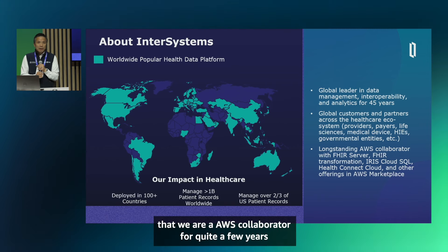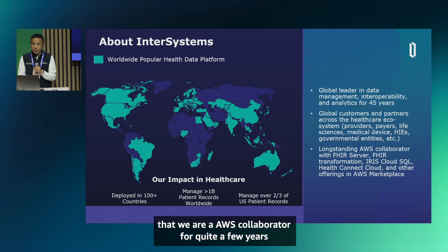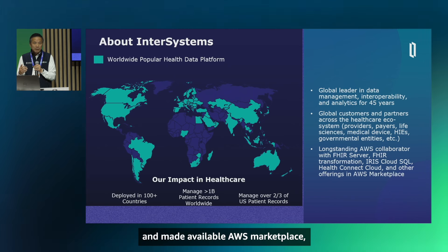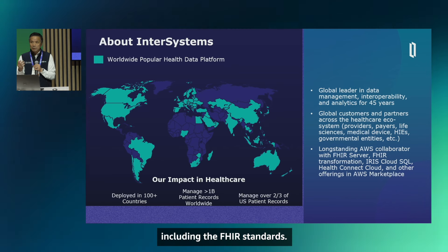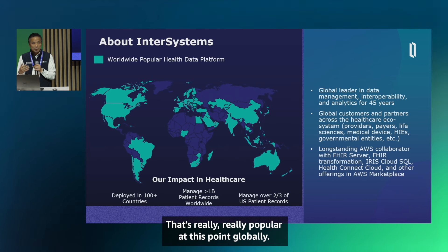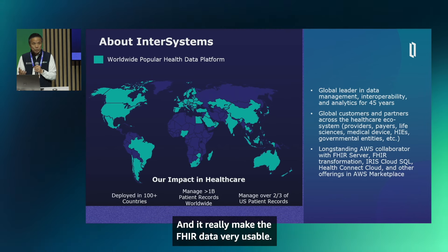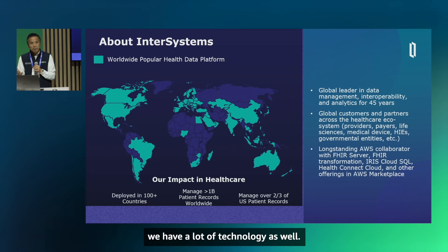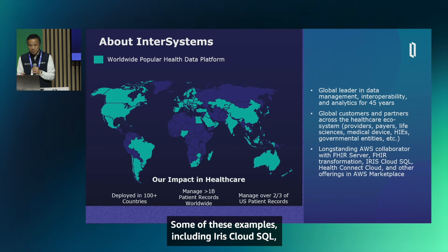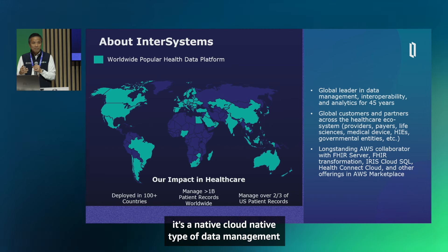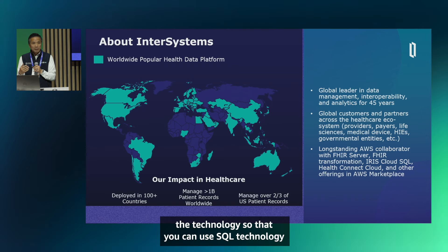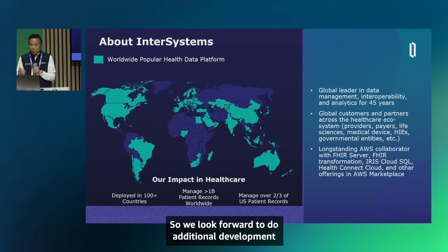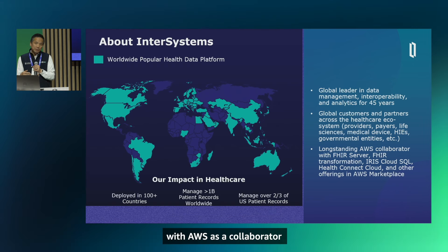We are an AWS collaborator and have developed products available on AWS Marketplace, leveraging standards including FHIR, which is really popular globally. We're making our data platform technologies available on the AWS platform — examples include IRIS Cloud SQL, a cloud-native data management technology — and we look forward to additional development with AWS. FHIR to OMOP is just one of those examples.